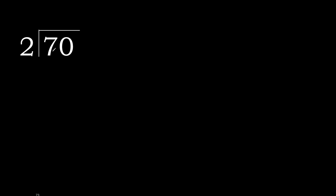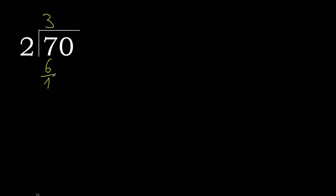70 divided by 2. Starting with 7: 2 multiplied by which number is nearest to 7 but not greater? 2 multiplied by 4 is 8 — 8 is greater. 2 multiplied by 3 is 6 — 6 is not greater. So 7 minus 6 is 1.